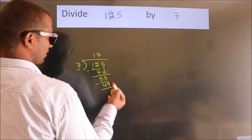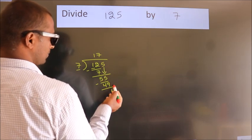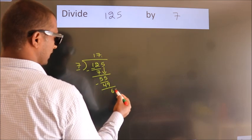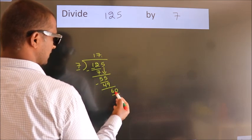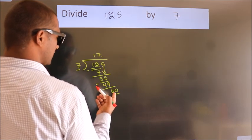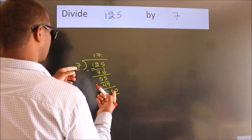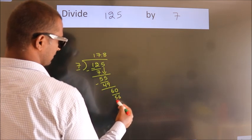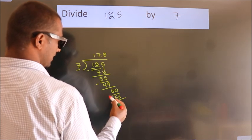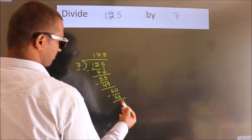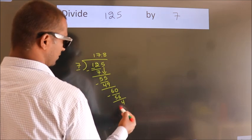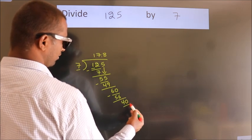After this, no more numbers to bring down. We already have the decimal, so directly take 0. So 40.